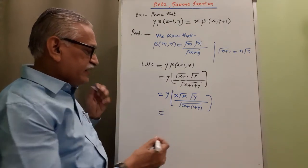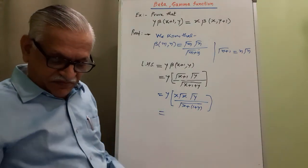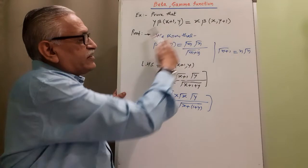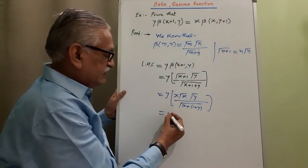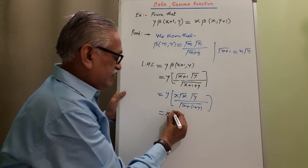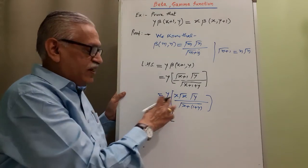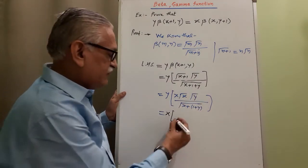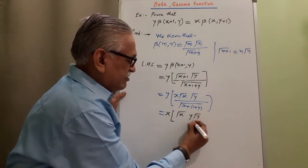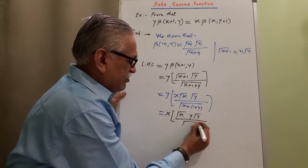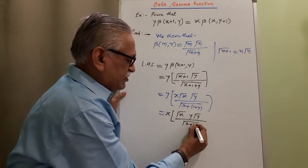And then, rewriting it, in right-hand side, we require X as outside. Therefore, I will take this X outside, and I will associate this Y with this gamma Y. Therefore, remaining terms are gamma X, Y gamma Y divided by gamma of X plus Y plus 1.